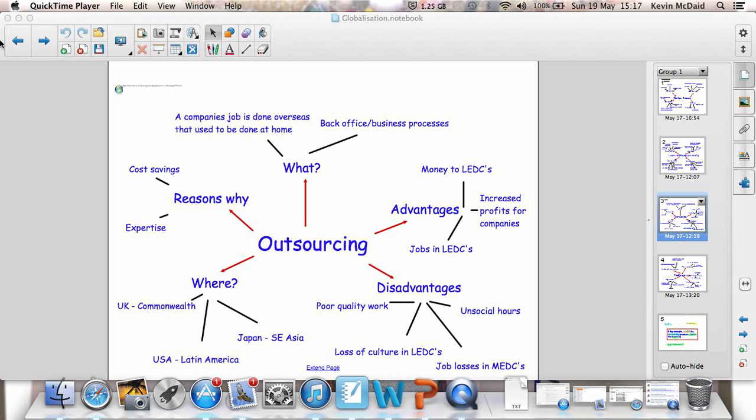Japan. Japanese companies outsource a lot of their work to Southeast Asian countries. USA outsources a lot of its work. American companies outsource a lot of their work to Latin America. And in the UK, it's places like the Commonwealth, in particular countries like India.